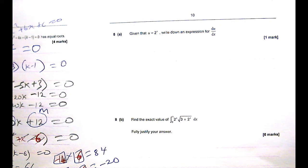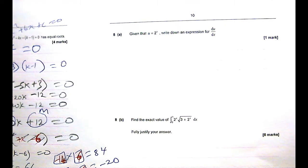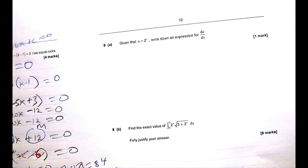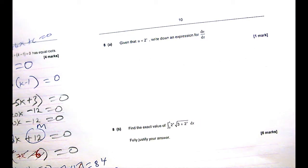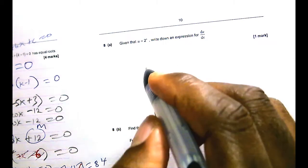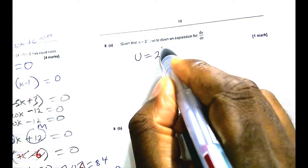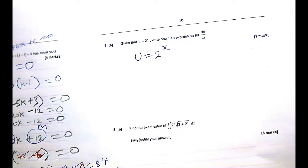Which says, is given that u equals 2 to the x, write the expression for du dx. Now, when you have questions like this, do not get too worried. It's only about implicit differentiation. Or you could just make x the subject. So I would rather make x the subject. So I have u equals 2 to the x. And to make x the subject, may I take lin of both sides.